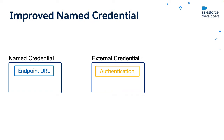If you have multiple orgs — say development environment, production environment, etc. — you can create a named credential with the same name but with a different endpoint URL in each org. In this case, you need not change the Apex code referencing this named credential and deploy it across all the orgs.